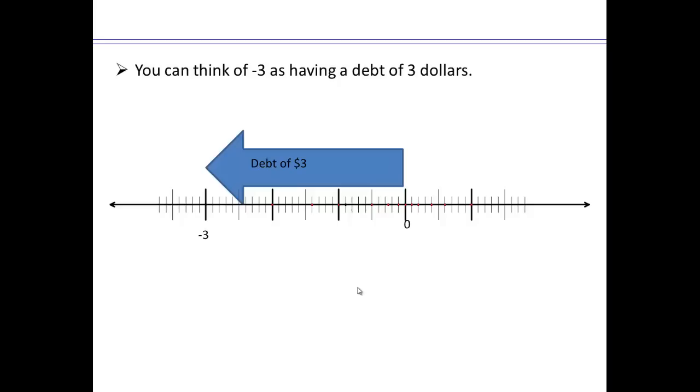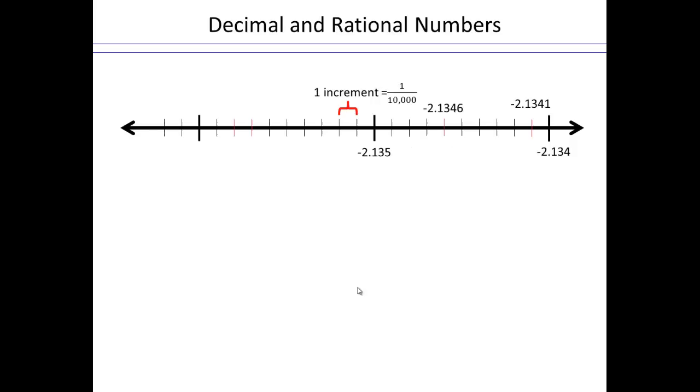That means we can plot our decimal and rational numbers on number line now. So if I say that the increment is 1 over 10,000 and I end up with this tick mark to be negative 2.135, then 10,000 later, which is right there, will be negative 2.134.